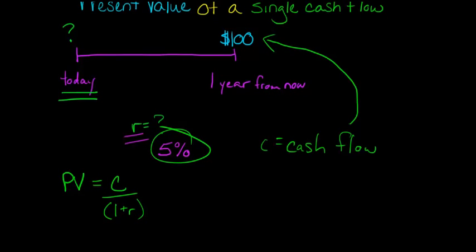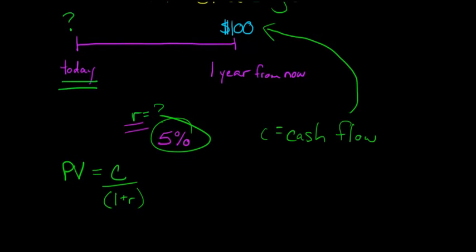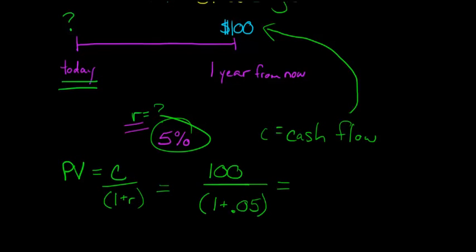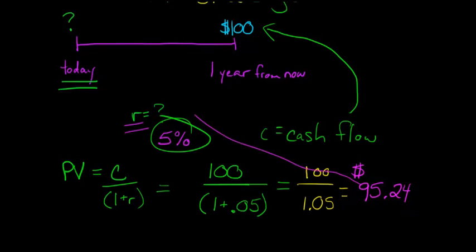R is 5%. So to get the present value of this $100 one year from now, we take 100 — our cash flow, that's C — over 1 plus 0.05. That simplifies to 100 over 1.05, and if you calculate that out, it's $95.24. So if you invested $95.24 today at 5% interest, you would have $100 one year from now.